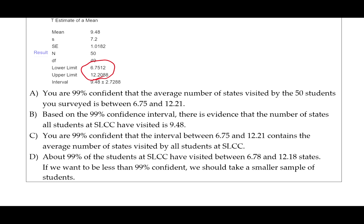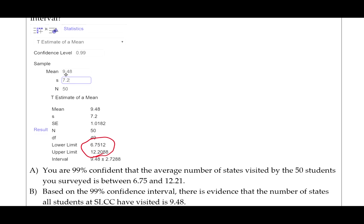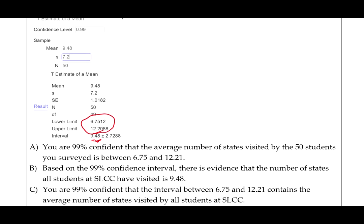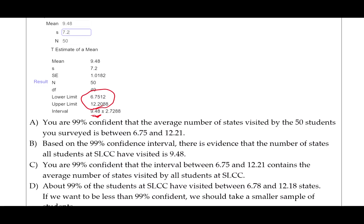The other problem with this statement is that it's talking about the average number visited by the 50 students that were surveyed. That's the sample statistic, not the population parameter. Notice that the sample mean is 9.48, which is the very center of the confidence interval. The way we got that lower and upper limit is by taking that point estimate 9.48 and adding and subtracting the margin of error. So we know for sure that the average number visited by the 50 students in the sample is between those two values.